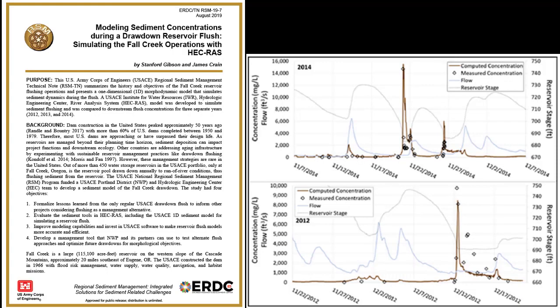So after the drawdown, I built a RAS model with Jim Crane from the Portland District, and we actually modeled these flushes and calibrated to the downstream concentrations measured by the USGS. All performed pretty well. I'll put the link to the report below.